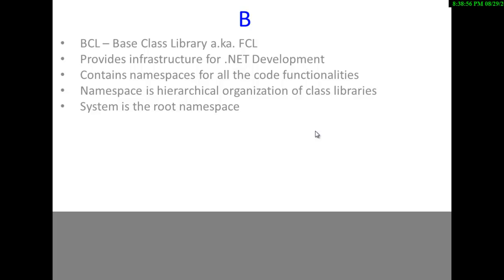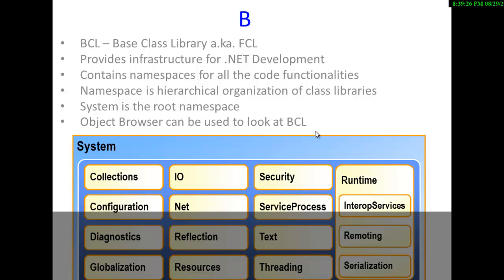System is the root namespace in the entire Base Class Library or Framework Class Library. In order to look at BCL, Object Browser is the tool which is provided with Visual Studio, and you can have a very close look at BCL by yourself. If you want to see how BCL actually looks like at a high level in picture format, this is how it looks.